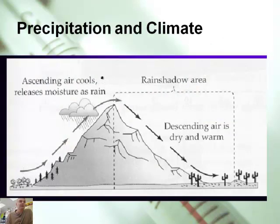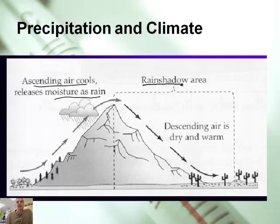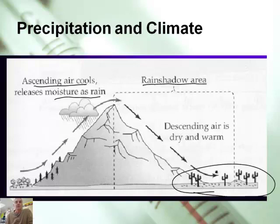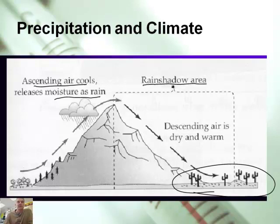The ascending air cools as it rises and releases moisture as rain, sometimes snow, making the windward side wetter. We should also talk about the rain shadow — the portion of the mountain on the leeward side where basically all the moisture is gone. This can lead to deserts on that side in many cases. If the mountains are tall enough, you find extremely dry places of the world on the leeward side.